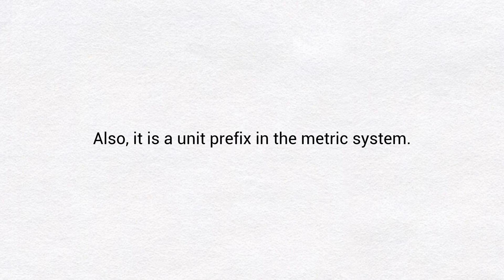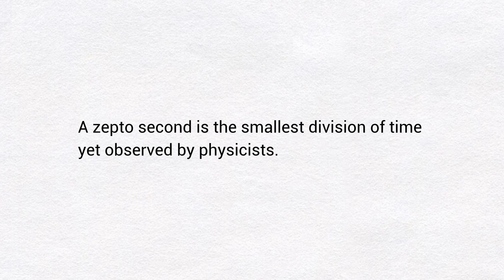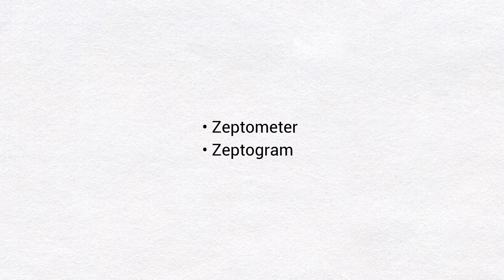Also, 'zepto' is a unit prefix in the metric system — that is one thousand to the power of negative seven. For example, one zeptosecond is a trillionth of a billionth of a second. A zeptosecond is the smallest division of time yet observed by physicists. Zeptometer and zeptogram will be discussed later in this video series.